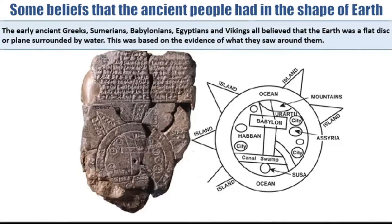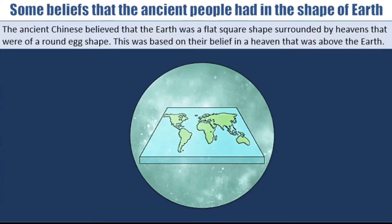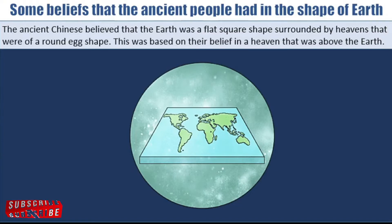The early ancient Greeks, Sumerians, Babylonians, Egyptians, and Vikings all believed that the Earth was a flat disk or plain surrounded by water. This was based on the evidence of what they saw around them. The ancient Chinese believed that the Earth was a flat square shape surrounded by heavens that were a round egg shape. This was based on their belief in a heaven that was above the Earth.